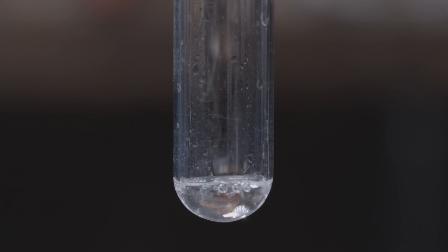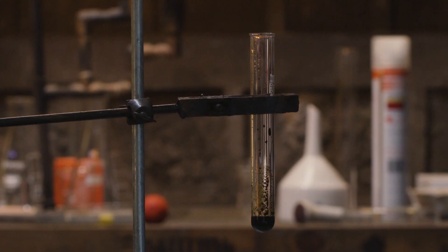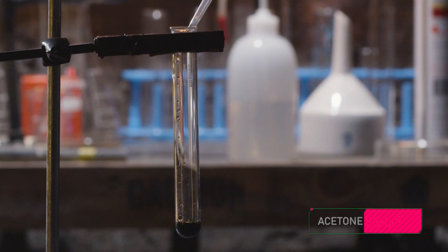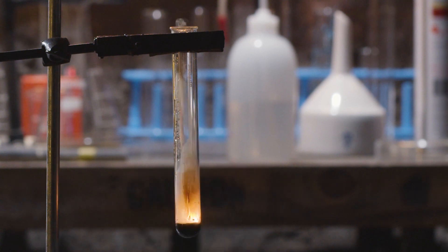Pour a bit of the same solution into a test tube and yeah, don't hold it if you want to keep your arms and eyes intact. Just put it on a stand like this. Now, from a distance, pour in a few drops of acetone or methanol and watch it burn and pop like a tiny rave.